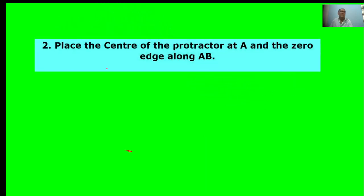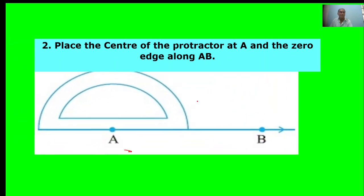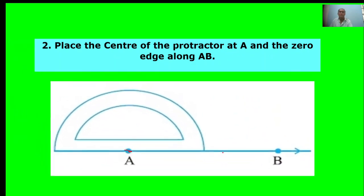Second point: Place the center of the protractor at A and the zero edge along B. Here, pick A as zero. This is the protractor edge.